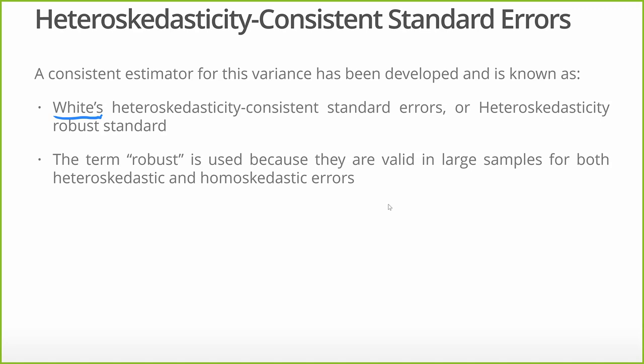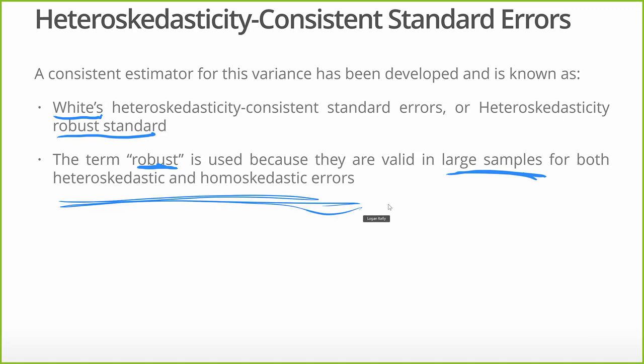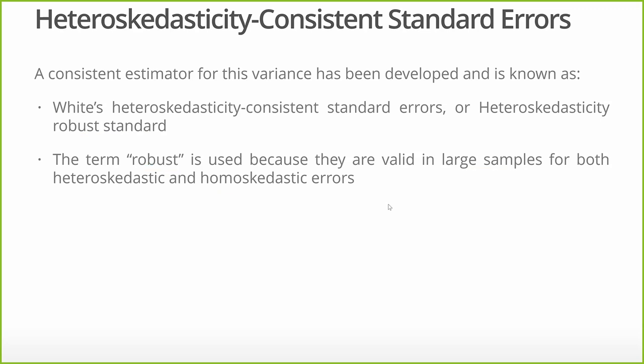To get these heteroskedasticity-consistent standard errors — or better yet, we call them robust standard errors — the term 'robust' is used because in large samples it works for either case, whether or not heteroskedasticity is present. So as long as we have a big enough sample, just use robust standard errors. And even in smaller samples, say more than 30 observations, it doesn't make too big a difference. So generally speaking, it makes sense to pretty much always use robust standard errors.